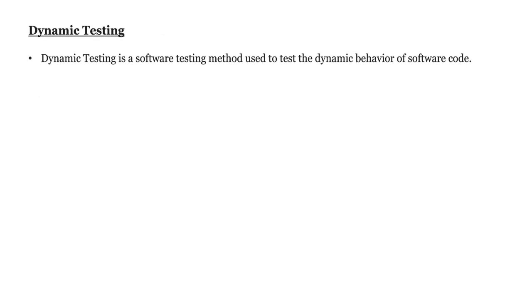Now let's move on to dynamic testing. Dynamic testing is a software testing method used to test the dynamic behavior of the software code. Here we will execute the code. In static testing we will not execute — we just go through an overview of whatever we have documented — but in case of dynamic testing, we check the dynamic behavior of the software by executing the code.